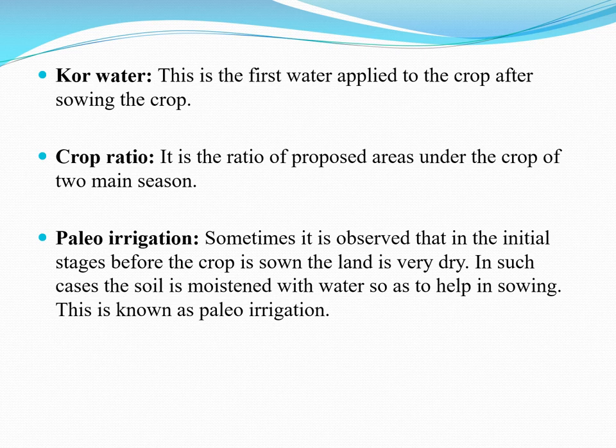Next is crop ratio. It is the ratio of proposed areas under the crop of two main seasons, that is Kharif and Rabbi seasons. The area to be irrigated for Rabbi crop is more than that for Kharif crop.